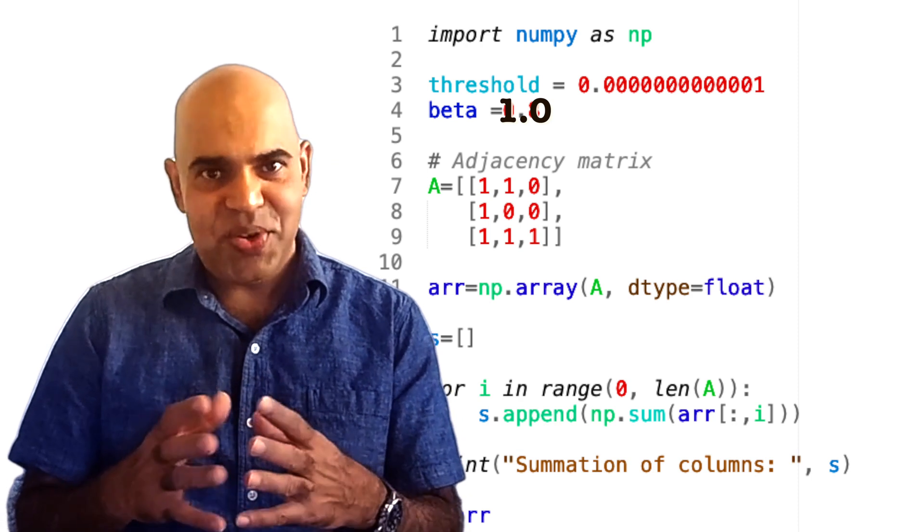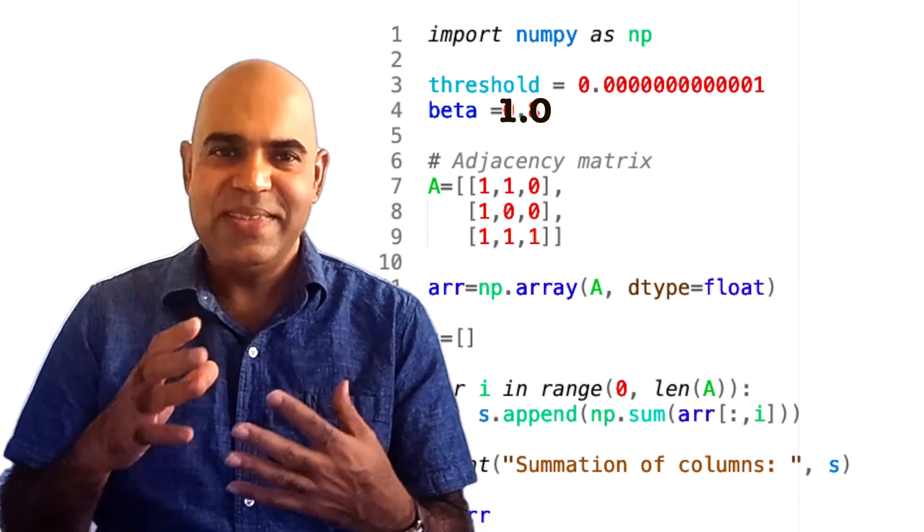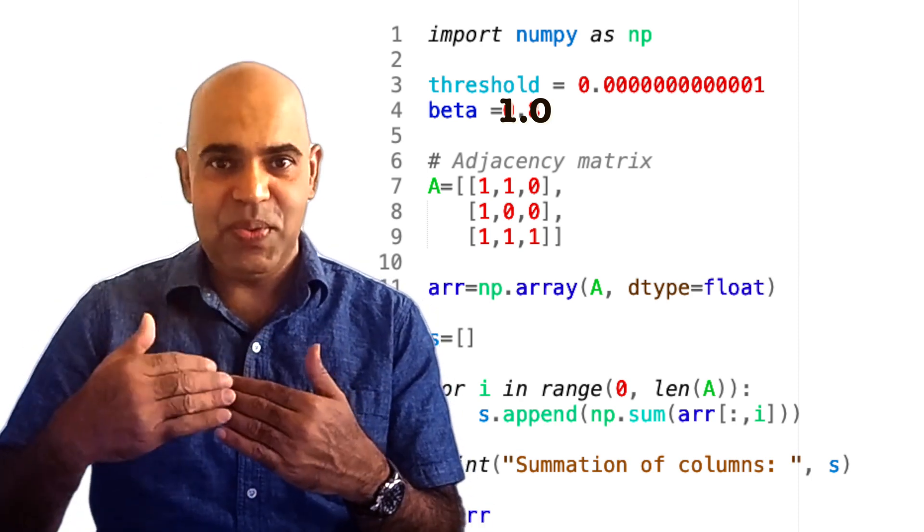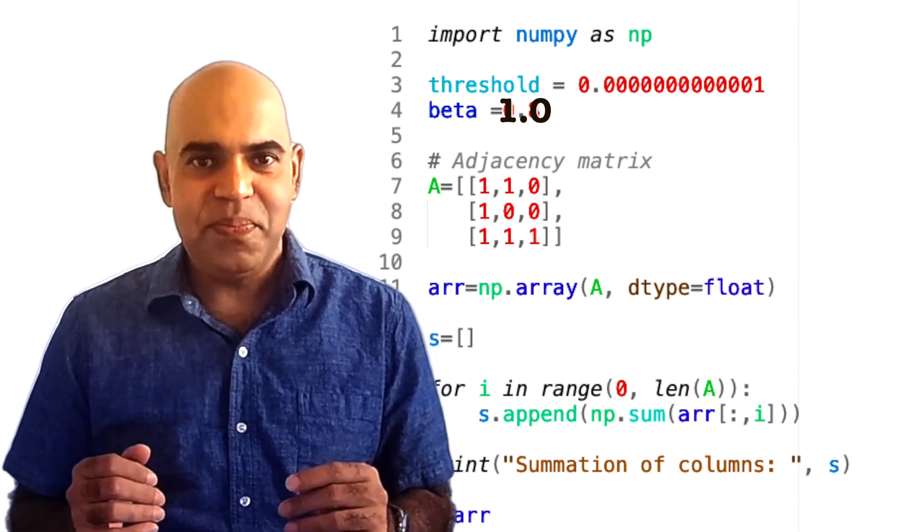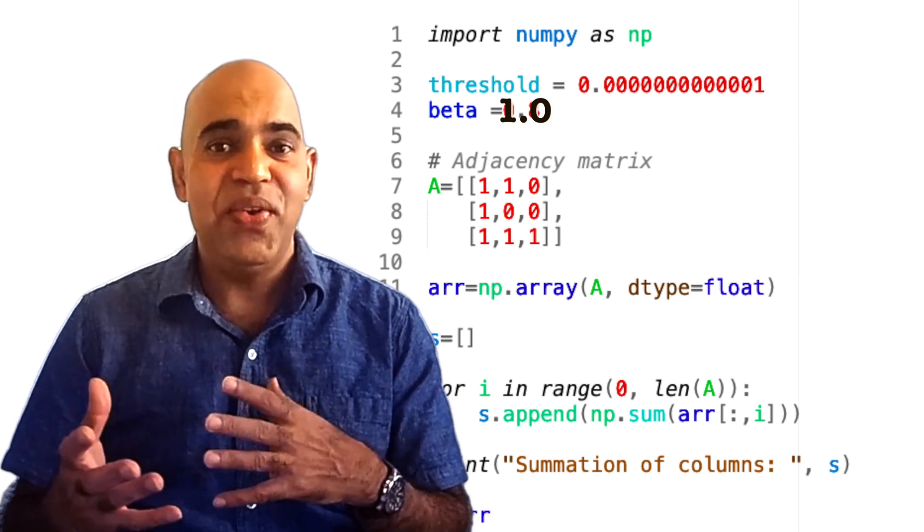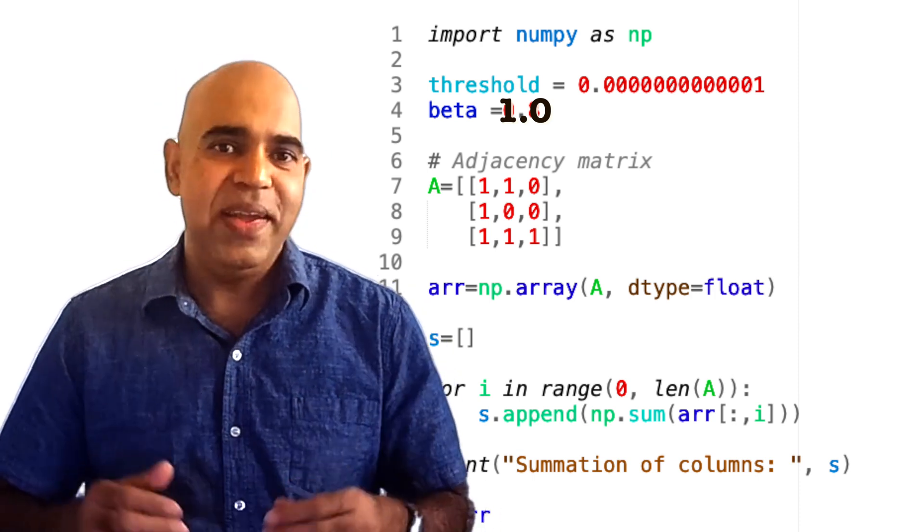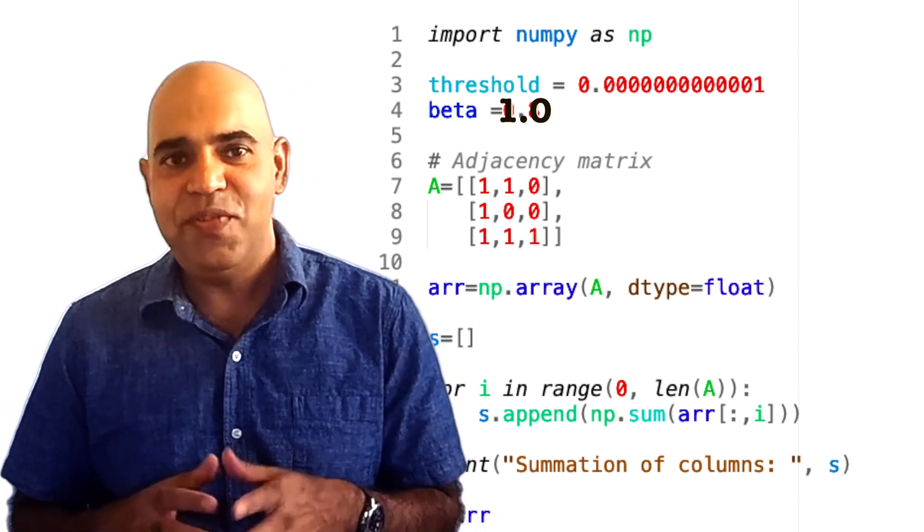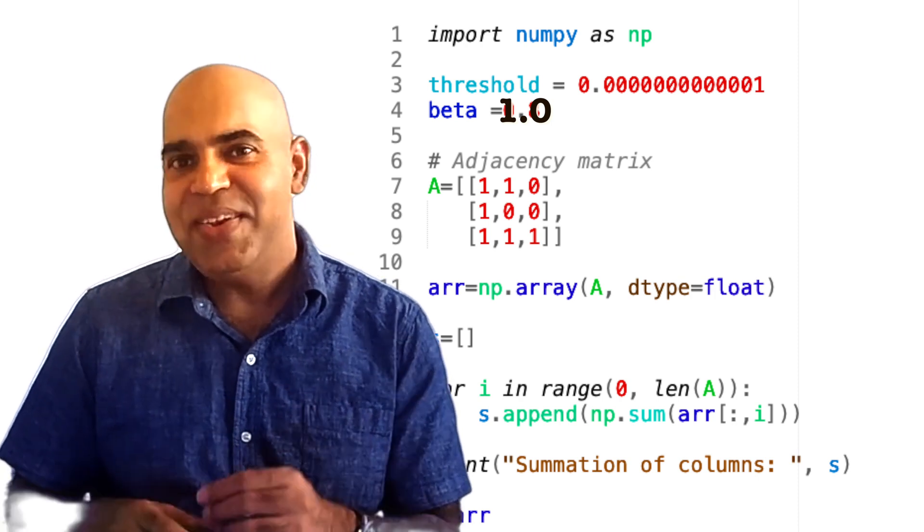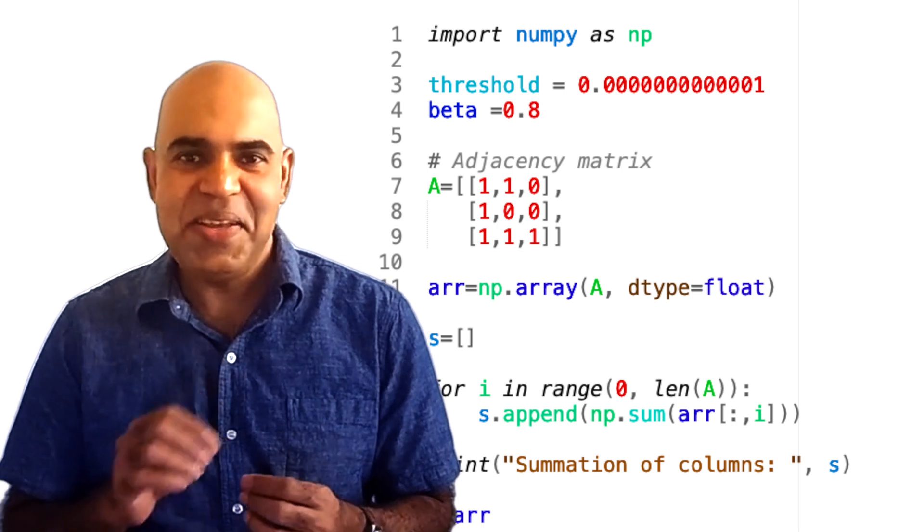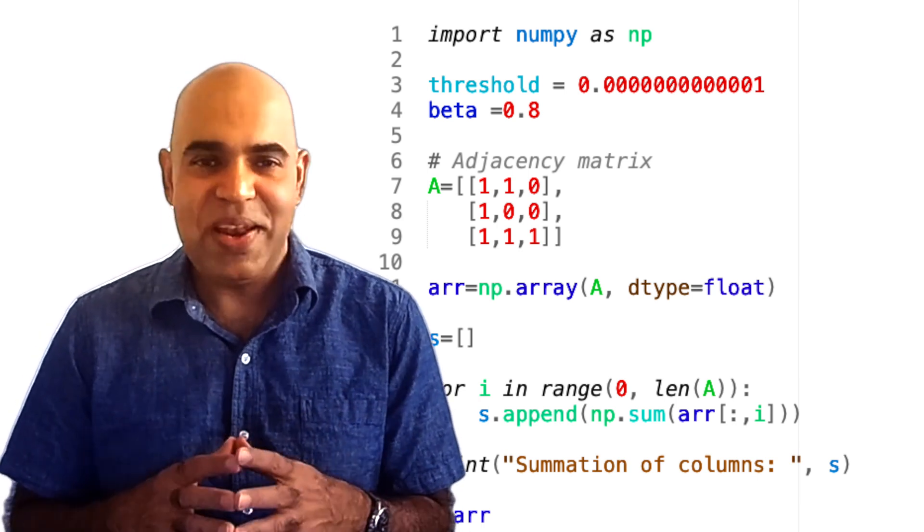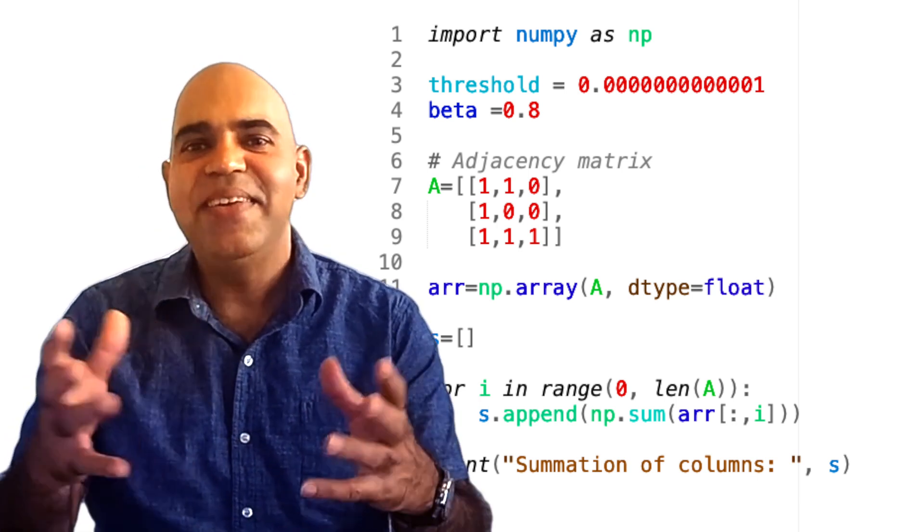To make our page rank model realistic, we typically set beta to a value less than 1, commonly a value between 0.8 and 0.9. Adjusting the beta value allows us to control the balance between link following and teleportation behavior in our model, which can lead to different page rank results. I'll set beta to 0.8 in my code because I don't like spider traps, and neither does Google.